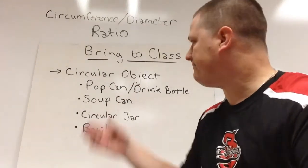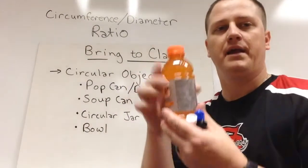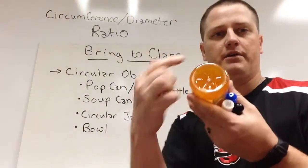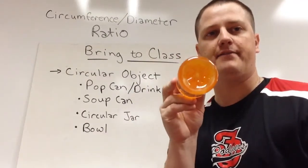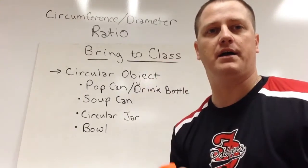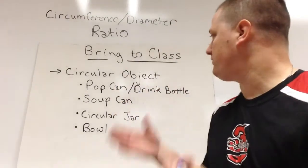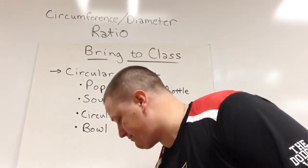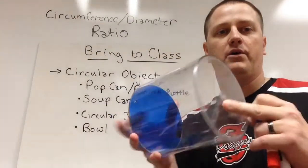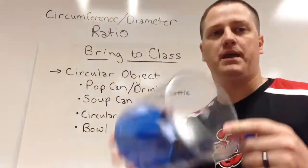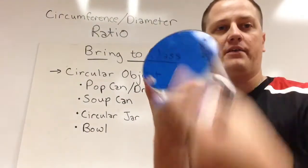Some examples could be a pop can or drink bottle. Here I have a Gatorade — if you notice, the bottom is circular, so we can use this circle as a real-life circle that will help us compare this ratio. A soup can — this isn't a soup can, but it's the shape of what a very large soup can would be. Notice it's a cylinder, so again, a circular base that we could use.